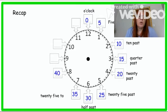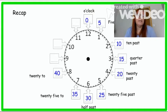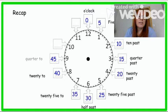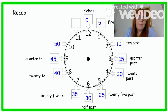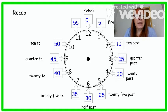When the minute hand is pointing towards the 8, we say that 40 minutes have gone by and there's 20 minutes to the next hour. When the minute hand is pointing towards the 9, we say 45 minutes have gone by and it's quarter to. When the minute hand is pointing towards the 10, although 50 minutes have gone by, there are 10 minutes before it gets to o'clock, so we say 10 to. And when the minute hand is pointing towards the 11, it's 5 minutes before it's o'clock.